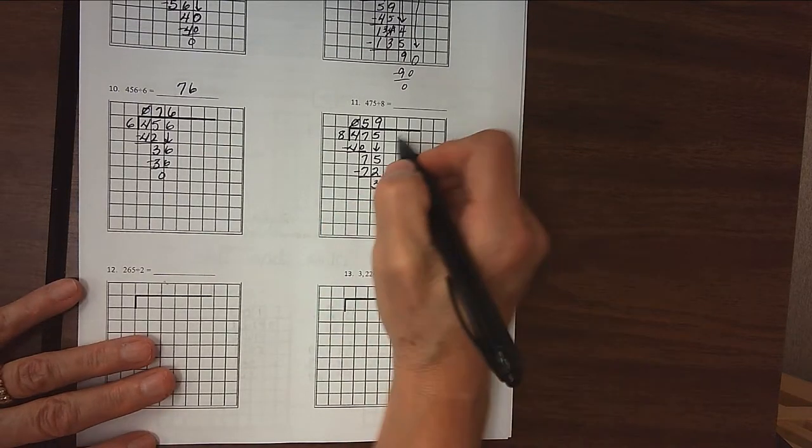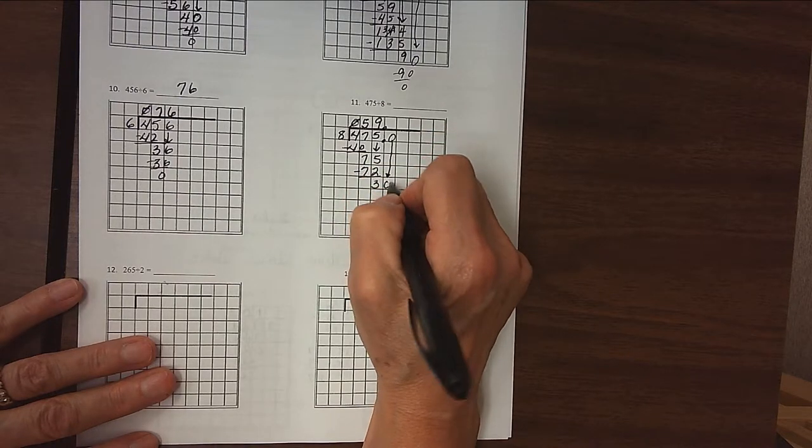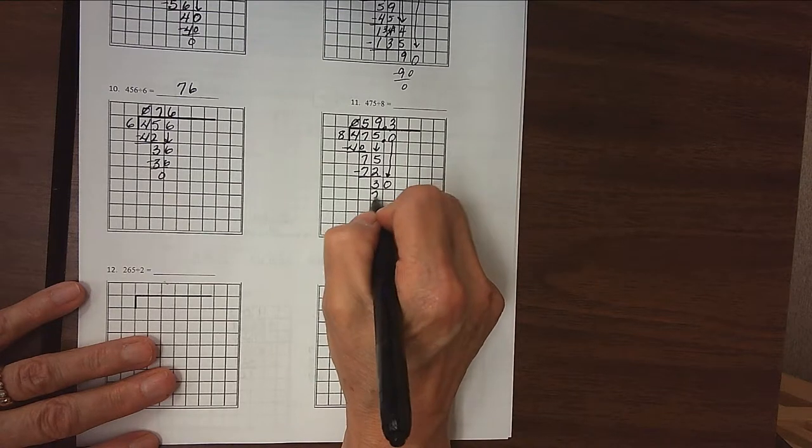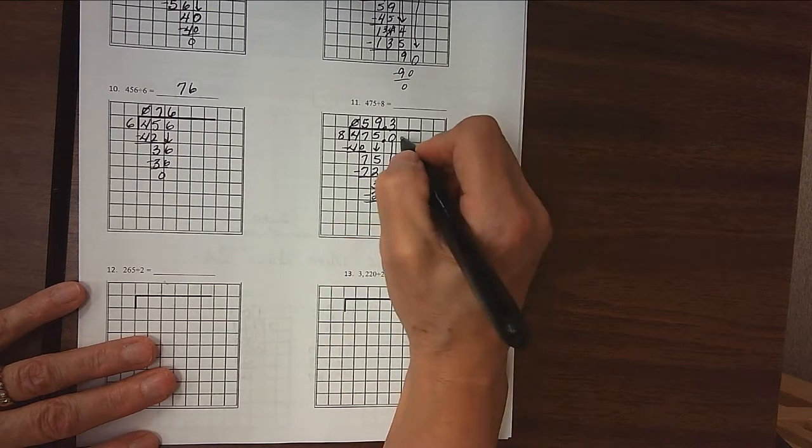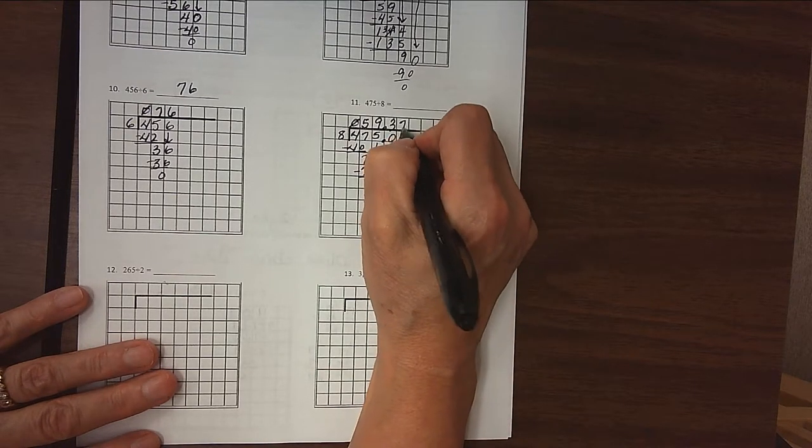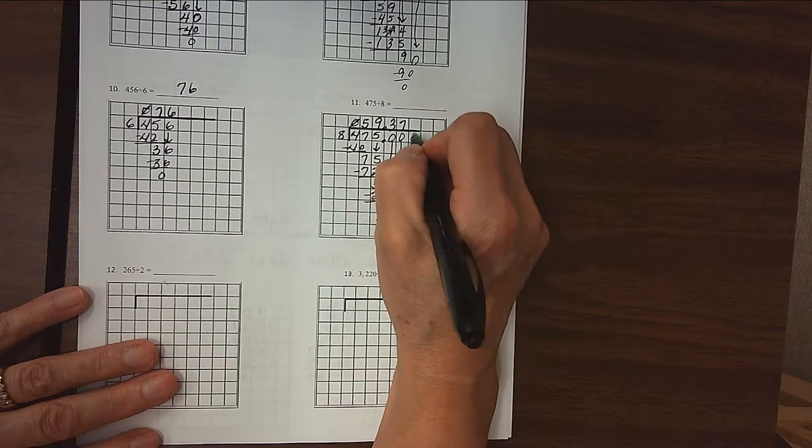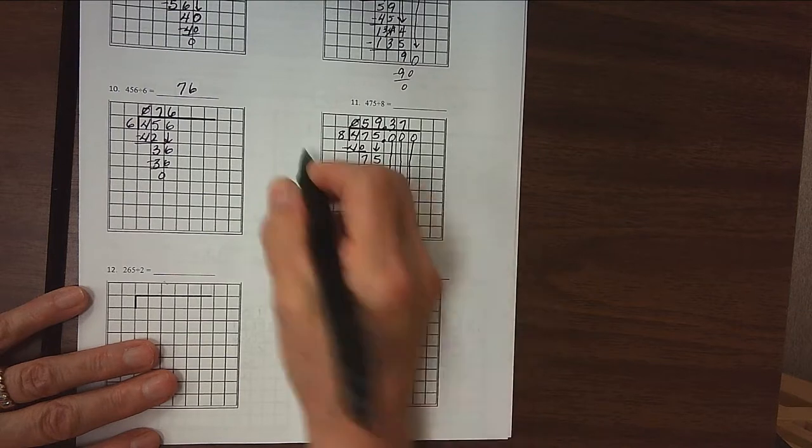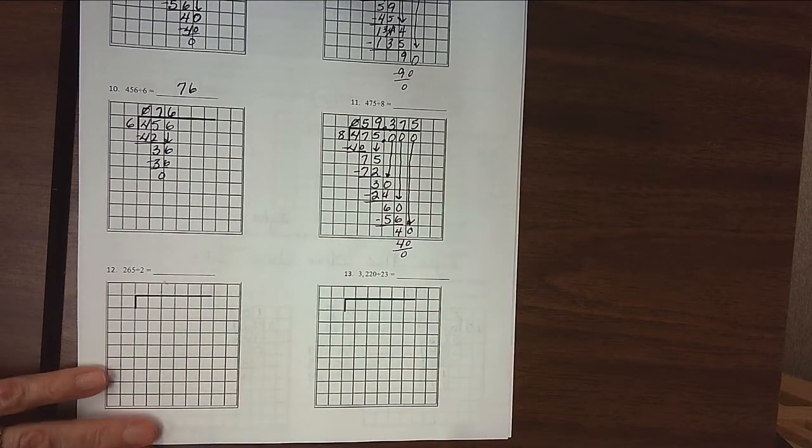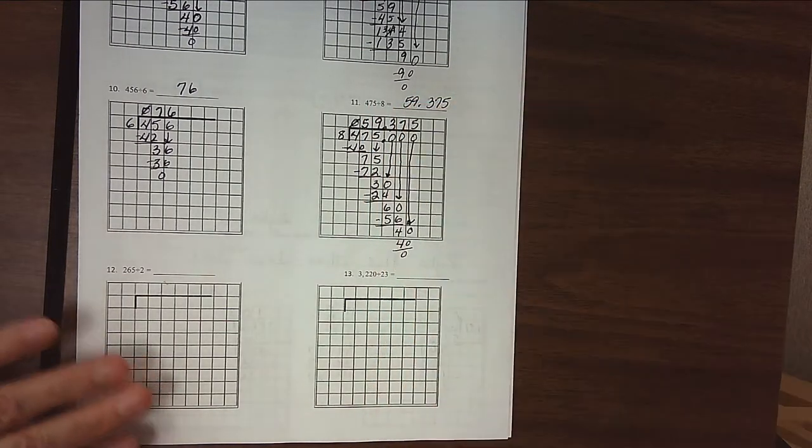We don't want to have remainders, so we add a decimal point in and out of the house and a 0 in the house. Bring it down. 8 divides into 30 three times. 8 times 3 is 24, so we subtract 24 to get 6 here. Add another 0. 8 divides into 60 seven times. 8 times 7 is 56. Subtract, we get a 4 here. Add another 0. And 8 divides into 40 five times. And we're done. So our answer is 59 and 375 thousandths.